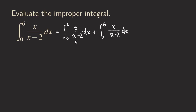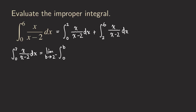Let's compute the first integral, from zero to two. We write it as a limit with b approaching two from the left, since we're taking all values smaller than two, with the integral from zero to b. To integrate x over x minus two, the fastest algebraic approach is to subtract two and add two back in the numerator.